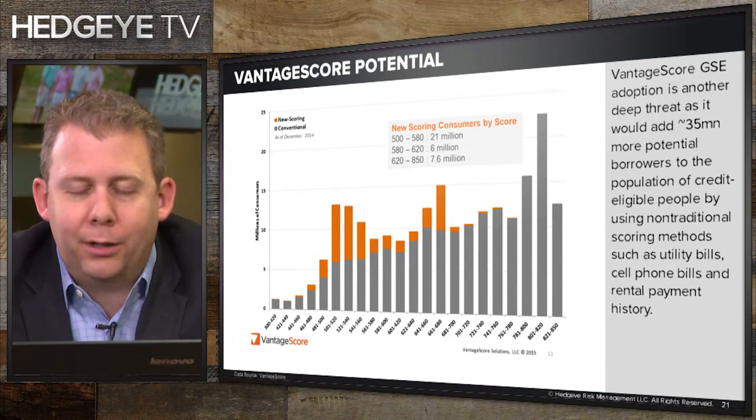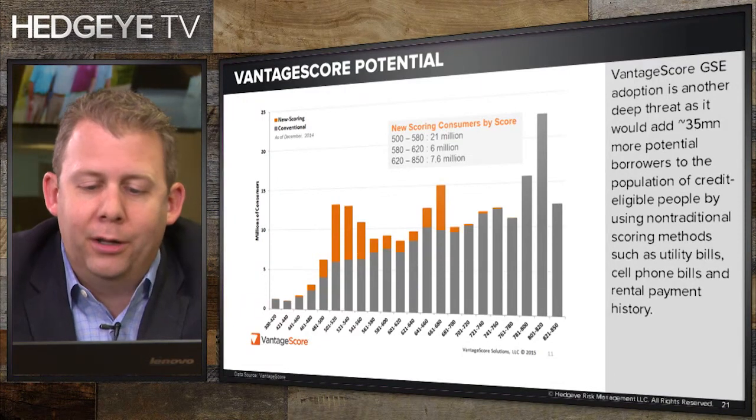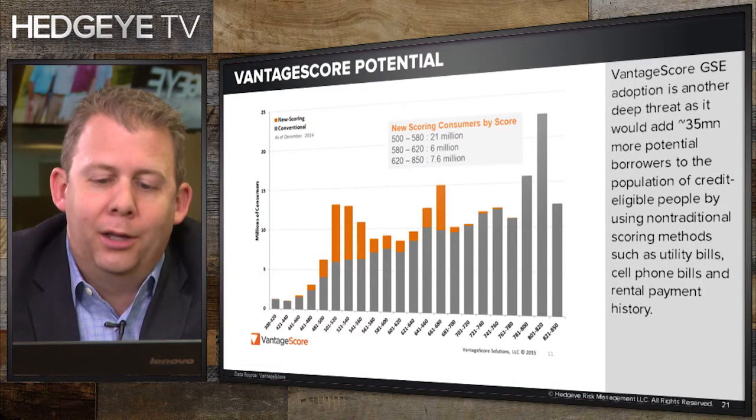FHFA — the Federal Housing and Finance Authority, the regulator overseeing Fannie and Freddie — has been evaluating for about a year and a half whether to incorporate VantageScore. There's no definitive timetable, and it's probably not happening in the immediate future. However, if it goes through in the next one, two, or even three years, it would be a very big bullish event for the housing market — probably unlocking about a million incremental people suddenly eligible for a mortgage.